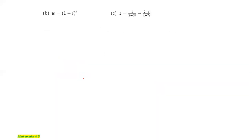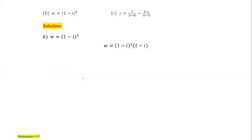Next, part B: (1 minus i) to the power of 3. As we saw previously, we first simplify this expression. The simplified form is minus 2 minus 2i. Therefore, the complex conjugate of this is minus 2 plus 2i — it is plus 2i because the imaginary part was minus 2i. This is the complex conjugate of w equals (1 minus i) to the power of 3.